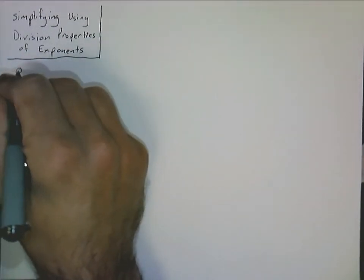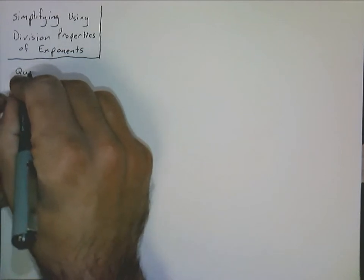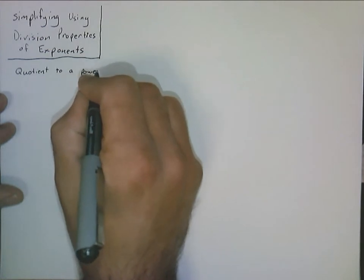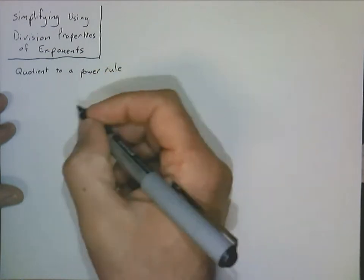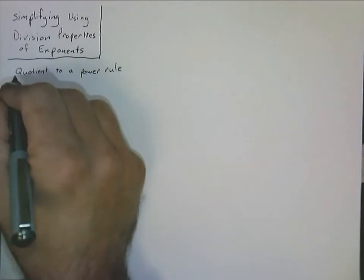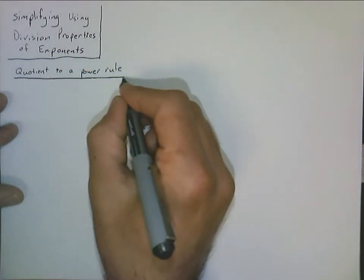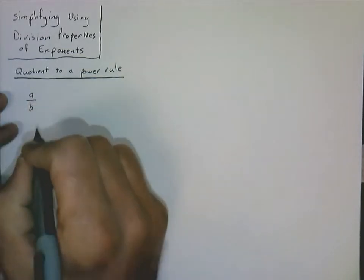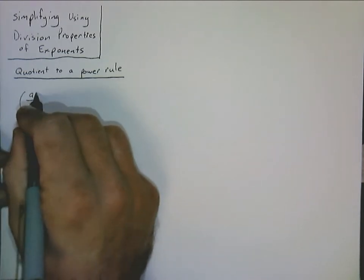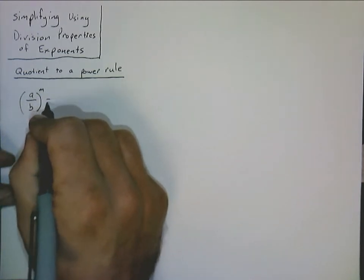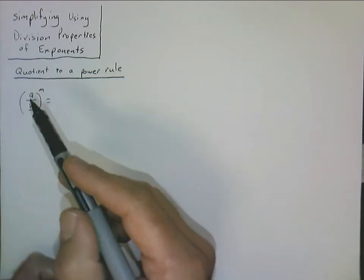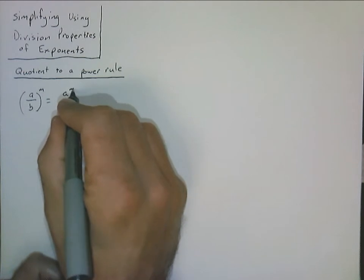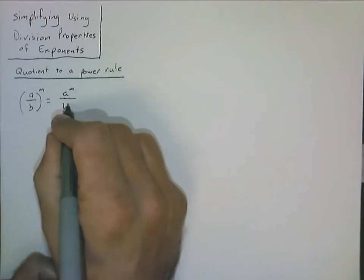The first property we're going to talk about is called the quotient-to-power rule. It's very similar to the product-to-power rule — essentially the distributive property but for exponents. So if we have a quotient, say a over b, raised to the power of m, the exponent gets distributed to both the numerator and the denominator, becoming a to the power of m over b to the power of m.